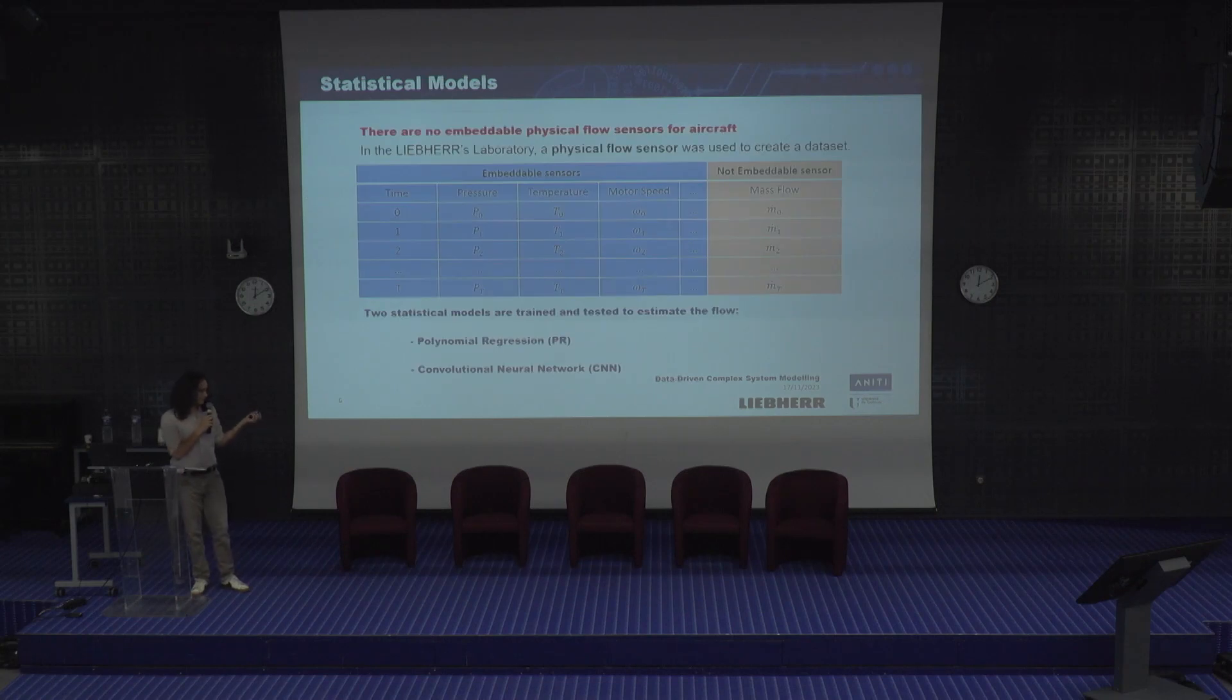And we don't have an embeddable sensor for mass flow in planes. So we will use a dataset that had been generated in Liber's laboratory with not embeddable sensors to evaluate the mass flow. And we will try to make an estimation of this mass flow with embeddable sensors like temperature and pressure, and information about the motor. And we will look for relations with two kinds of models, polynomial regression and convolutional neural network.